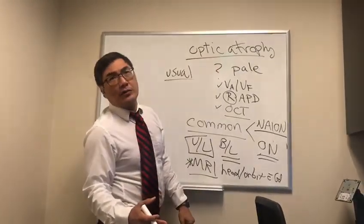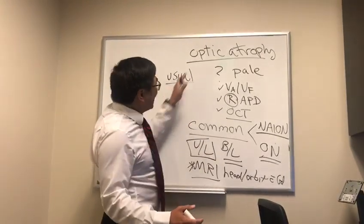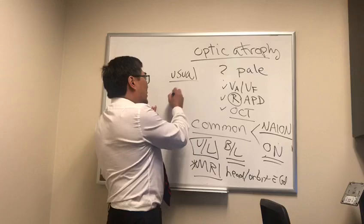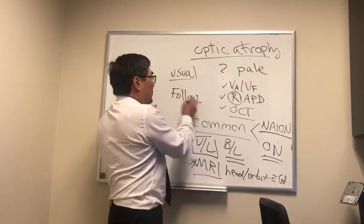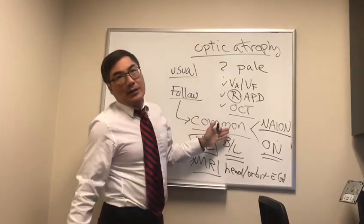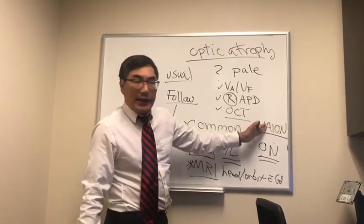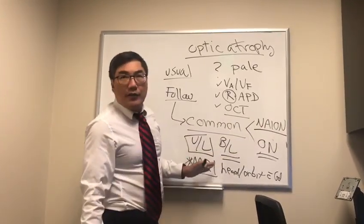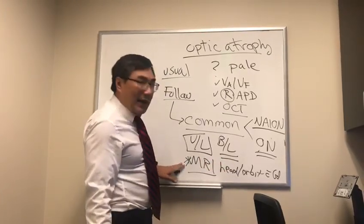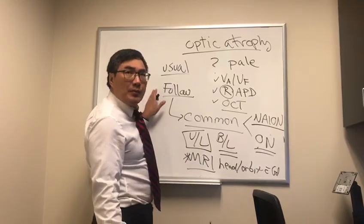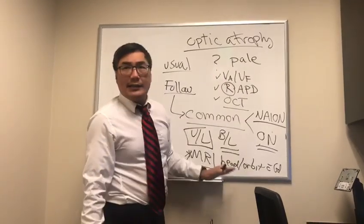Of the list, syphilis would be the most common. And if that's negative, we can just follow the patient and see if there's progression, because it's still probably one of these common presentations of a common disorder: NAION, optic neuritis, if it's bilateral, toxic, nutritional, and if it's unilateral, a compressive lesion that might show later. If it stays the same, we probably would stop at what I would call second-line testing.